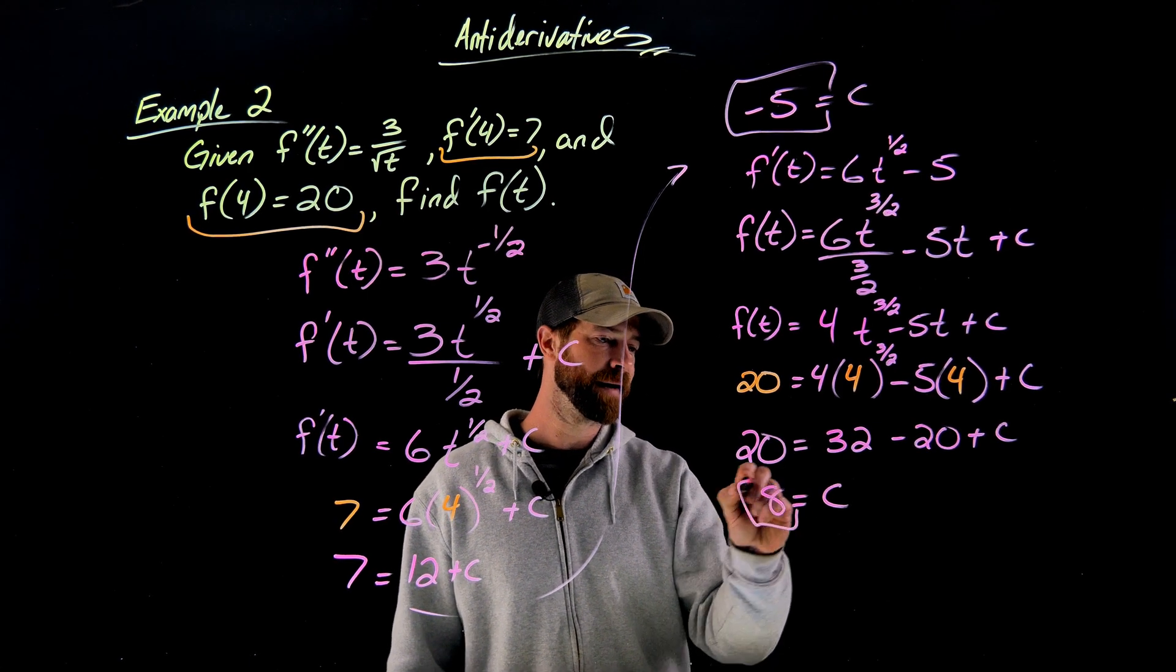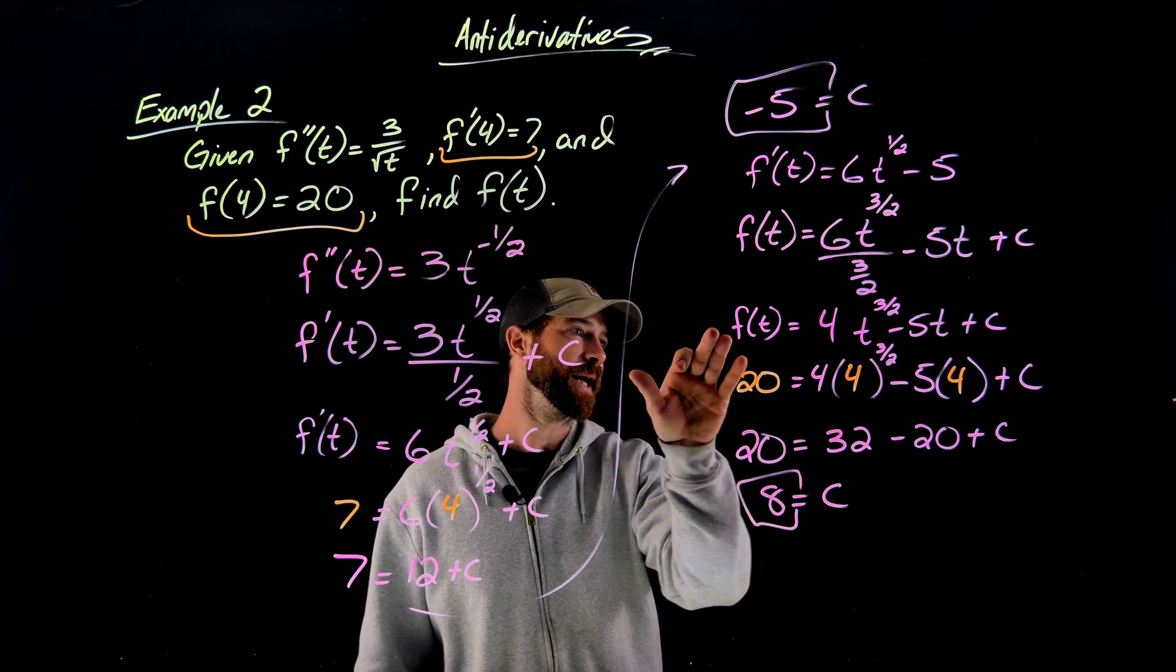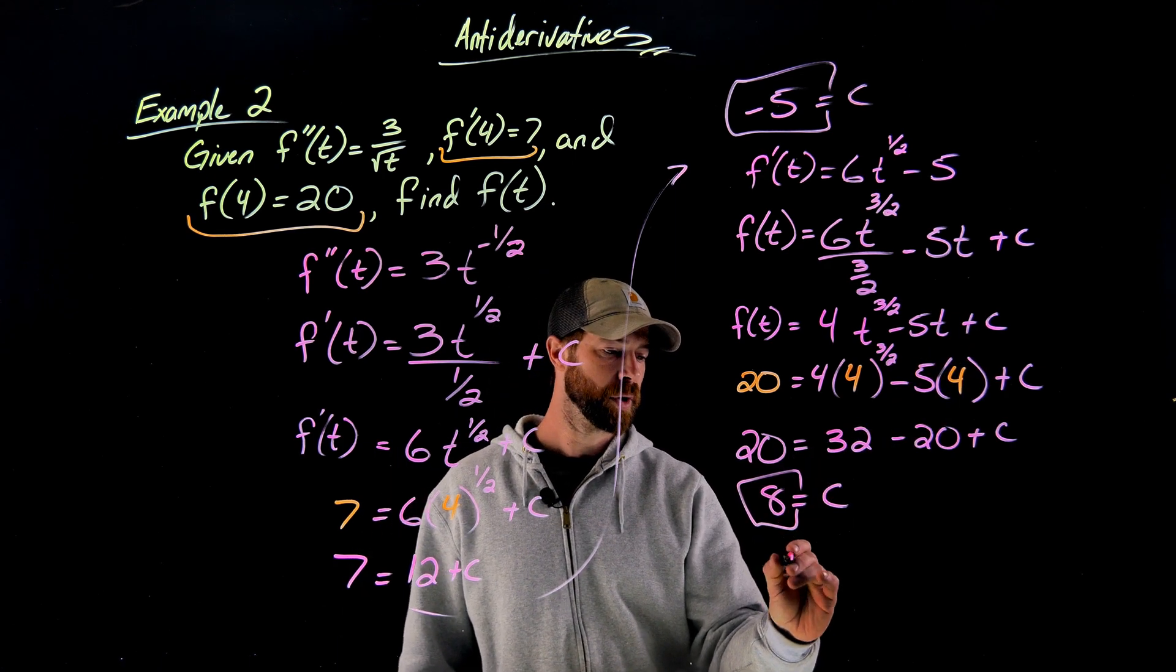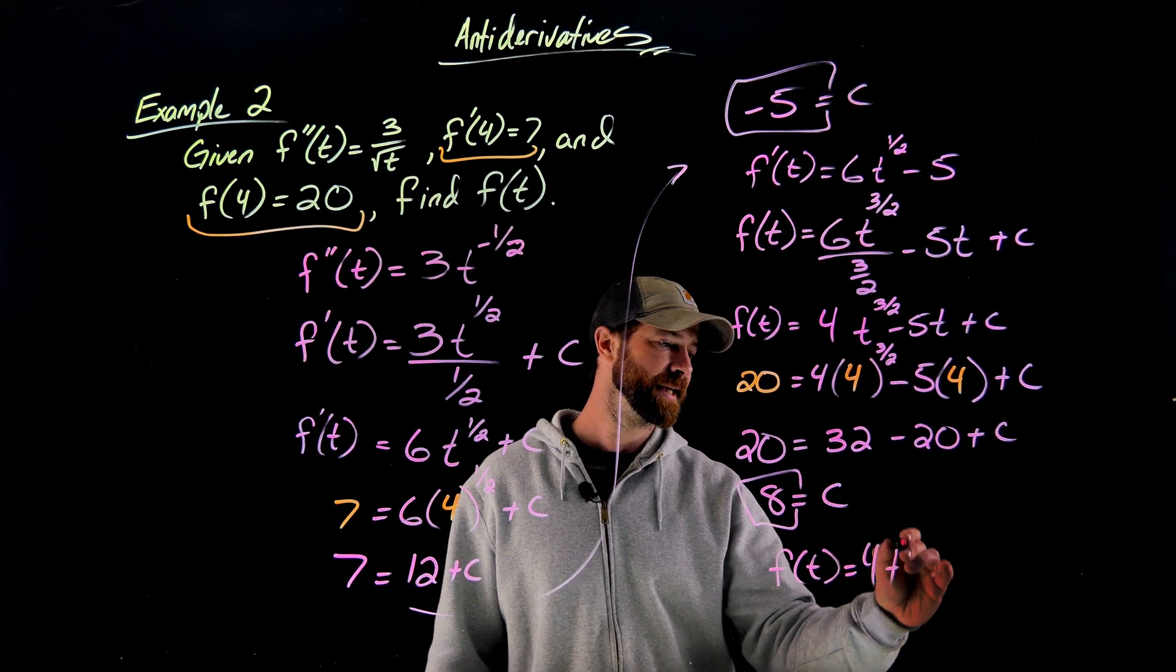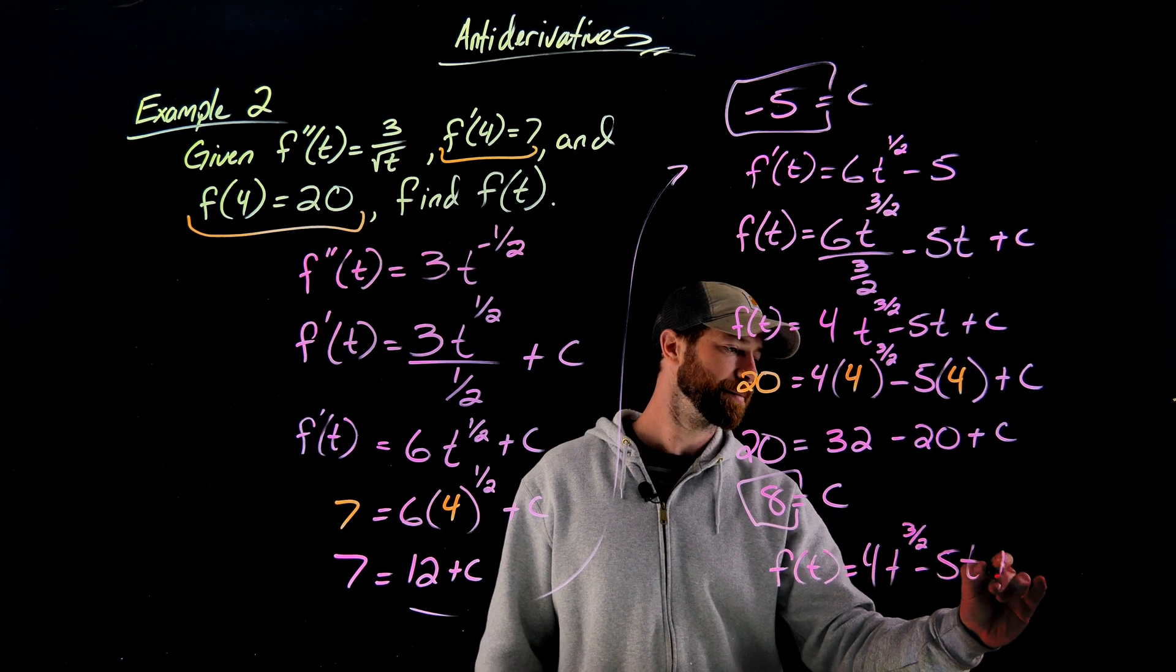And there I have my final constant value giving me that my original function is this right here, but just an 8. So f of t equals 4t to the 3 halves minus 5t plus 8.